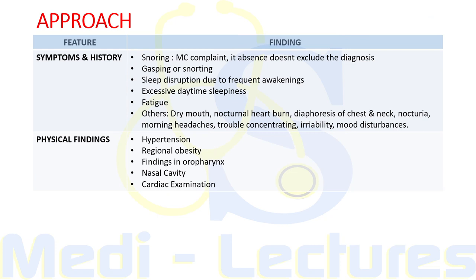Physical examination findings: check blood pressure for associated hypertension. Note regional obesity including increased waist and neck circumference. Examine the oral cavity for small orifice, crowding of teeth, bulky uvula, large tonsils, or high arched palate. Examine the nasal cavity for polyps, deviated nasal septum, or allergic rhinitis. Cardiac examination is important to detect any cardiac dysfunction.